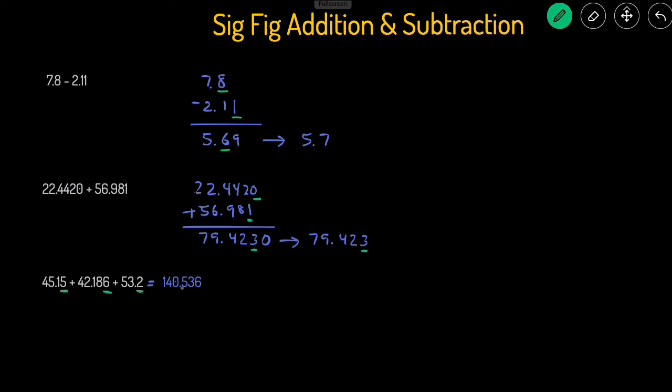So one digit away from the decimal point corresponds to the 5. We look at the number next to the 5, which is a 3. Since 3 is less than 5, that means we're not going to round up, so the final answer will be 150.3.